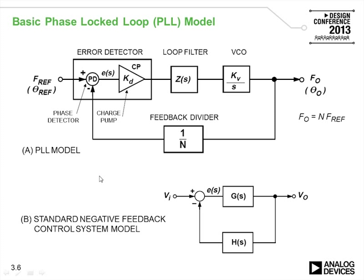The only difference is we're operating in the frequency domain rather than in the voltage domain. We have an input frequency and a phase detector which acts as an error detector. The forward gain element has a loop filter and a VCO. We take the output frequency, divide it down, and input it back into the negative input of the phase detector, closing the loop. When the error signal ES approaches zero, the reference frequency and the fed-back output frequency are equal, giving us F_out = N × F_ref — the basic equation for a phase locked loop.